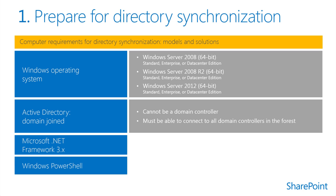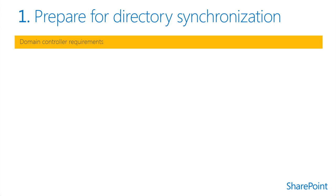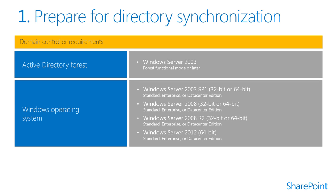Only users or administrators with necessary permissions to make changes to domain controllers and Active Directory should have access to the directory synchronization computer. You can only install one computer running the directory synchronization tool between an on-premises Active Directory and an Office 365 tenant. The directory synchronization computer must run a supported 64-bit Windows Server operating system: Windows Server 2008 R2 with Service Pack 1 Standard or Enterprise Edition, Windows Server 2008 Data Center or 2008 R2 Data Center, or Windows Server 2012 Standard or Data Center.